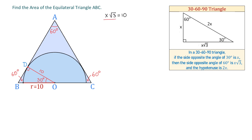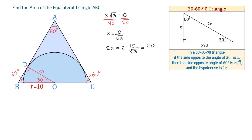We can find X by dividing both sides by square root of 3. Then X equals 10 over square root of 3. And now, to find the hypotenuse, we need to multiply X by 2. So 2X equals 2 times 10 over square root of 3, which equals 20 over square root of 3. And this is the hypotenuse OB.